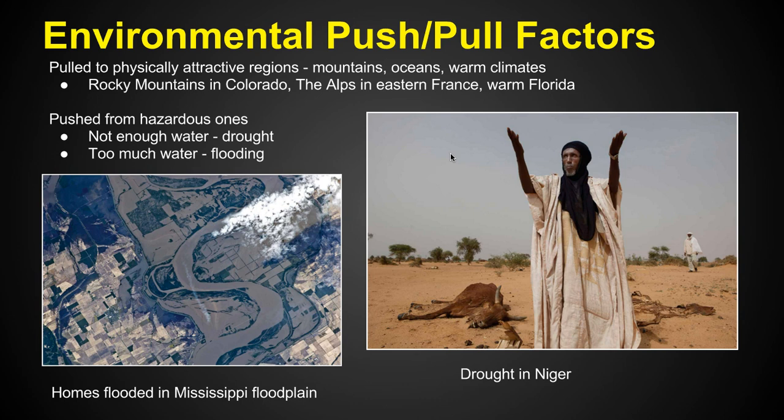Now let's look at environmental push-pull factors. People are pulled to physically attractive regions — think about Colorado with its beautiful mountains, or Florida with its oceans and warm climate. Also in Europe, think about the Alps in eastern France. People are pushed from hazardous areas — maybe they don't have enough water due to drought and can't grow crops, or maybe there's too much water, such as flooding.